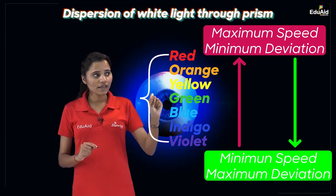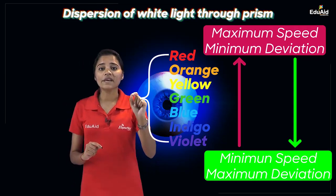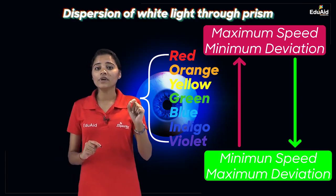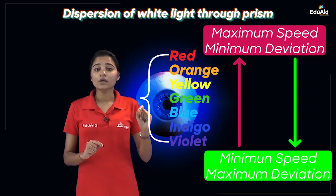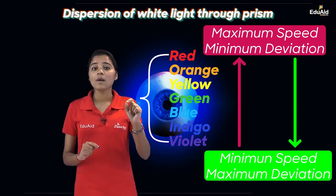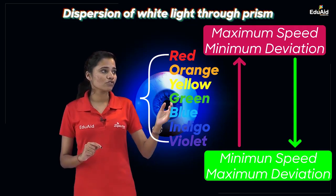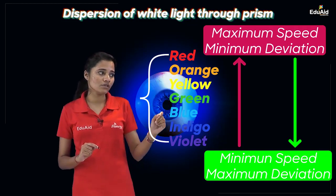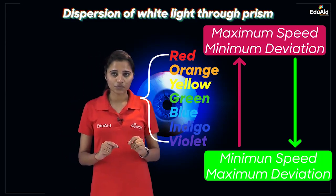That means inside the prism, red will have the maximum speed and hence will suffer the minimum deviation. On the other hand, violet will have the minimum speed and will suffer the maximum deviation. That is the reason in the spectrum, red lies at the top position while the violet colour is at the bottom part.